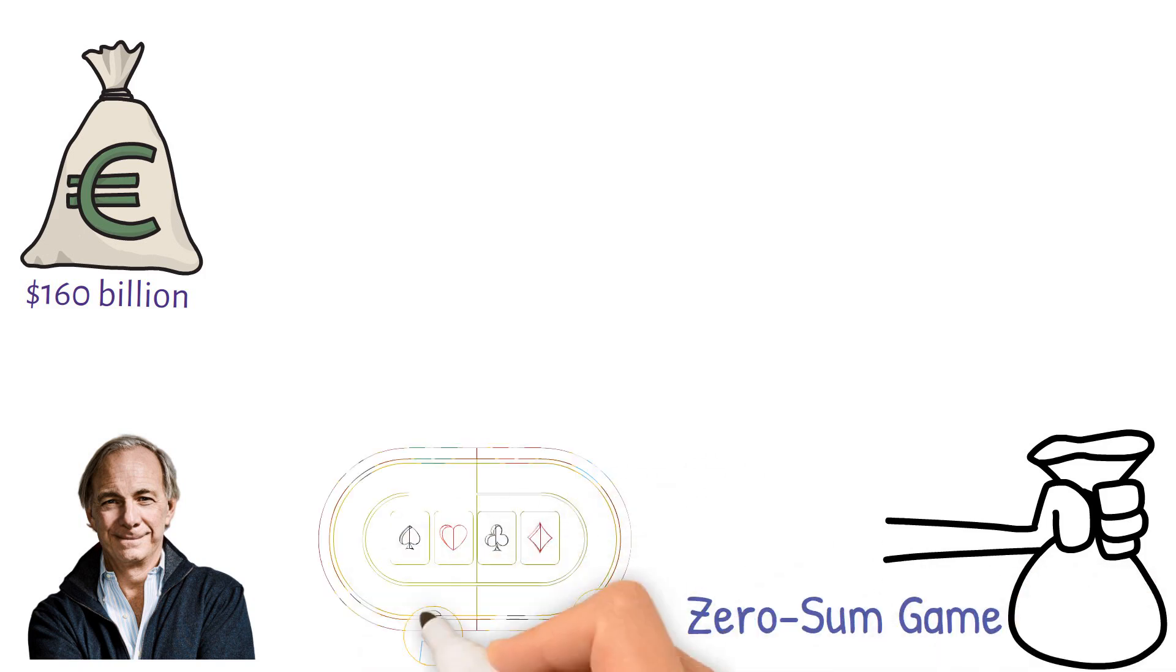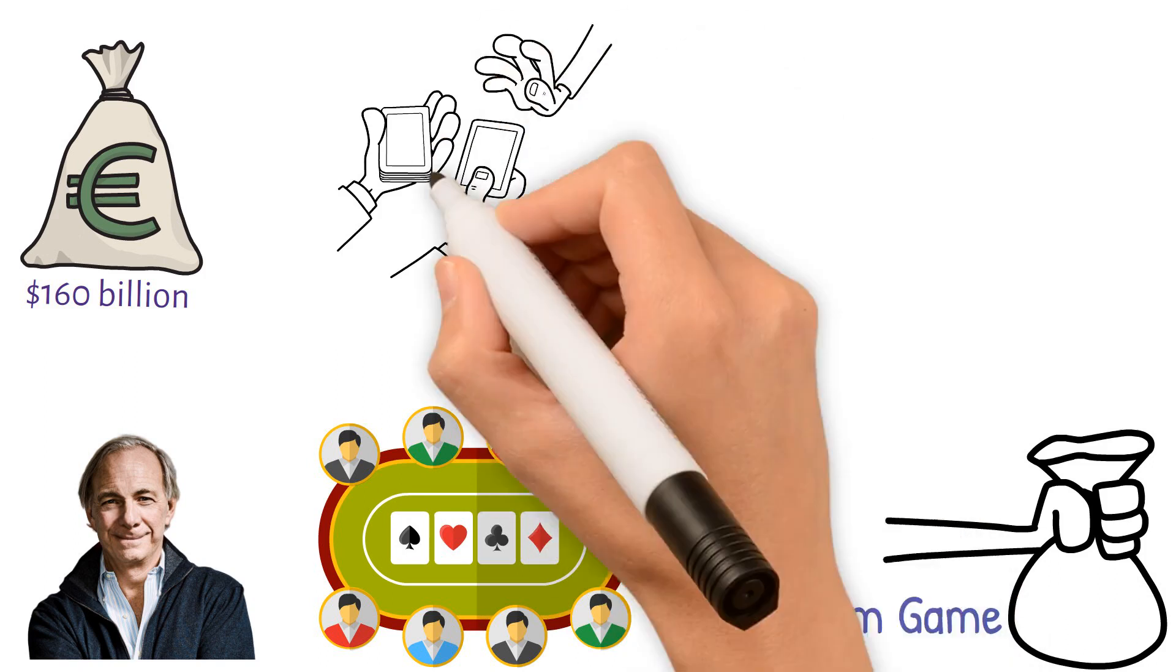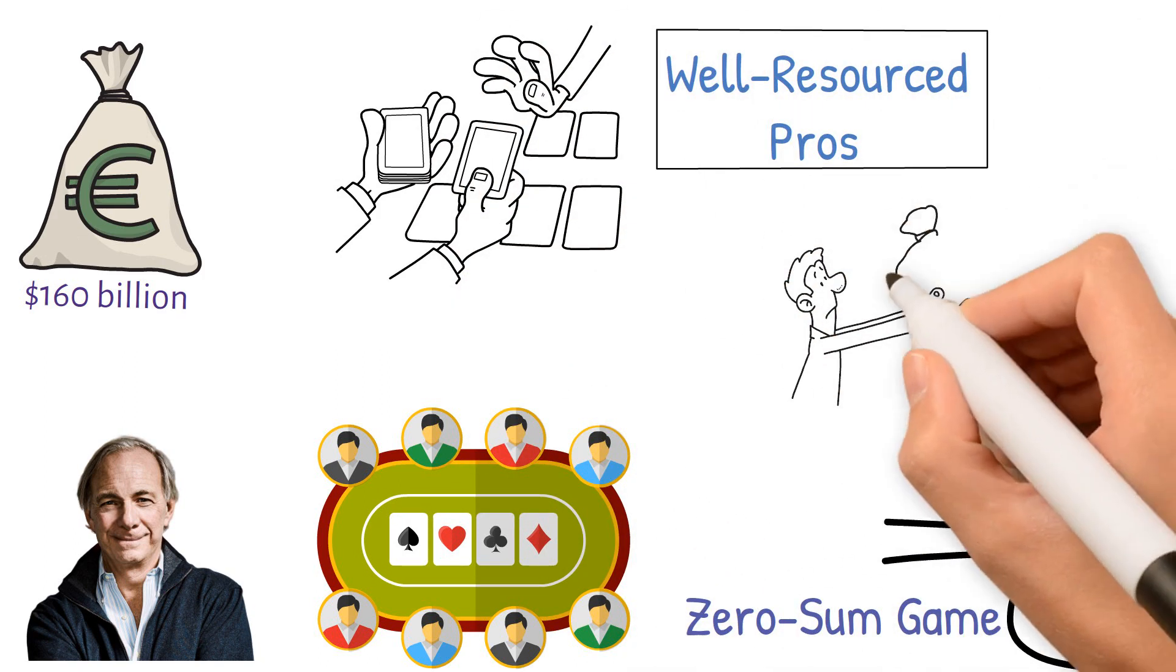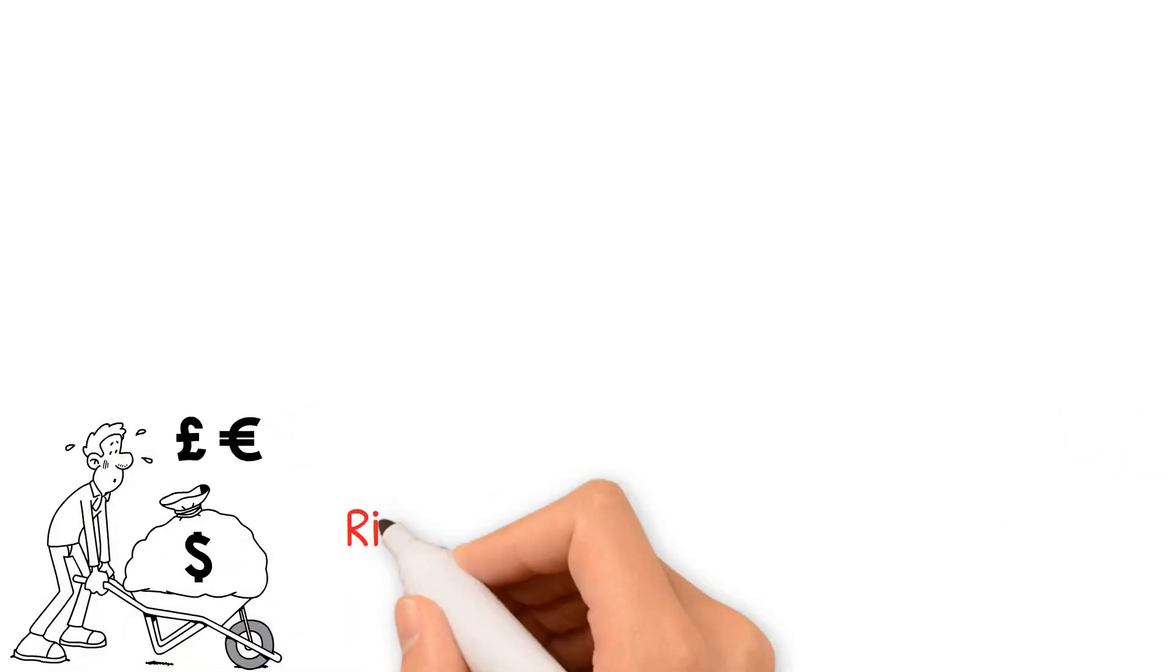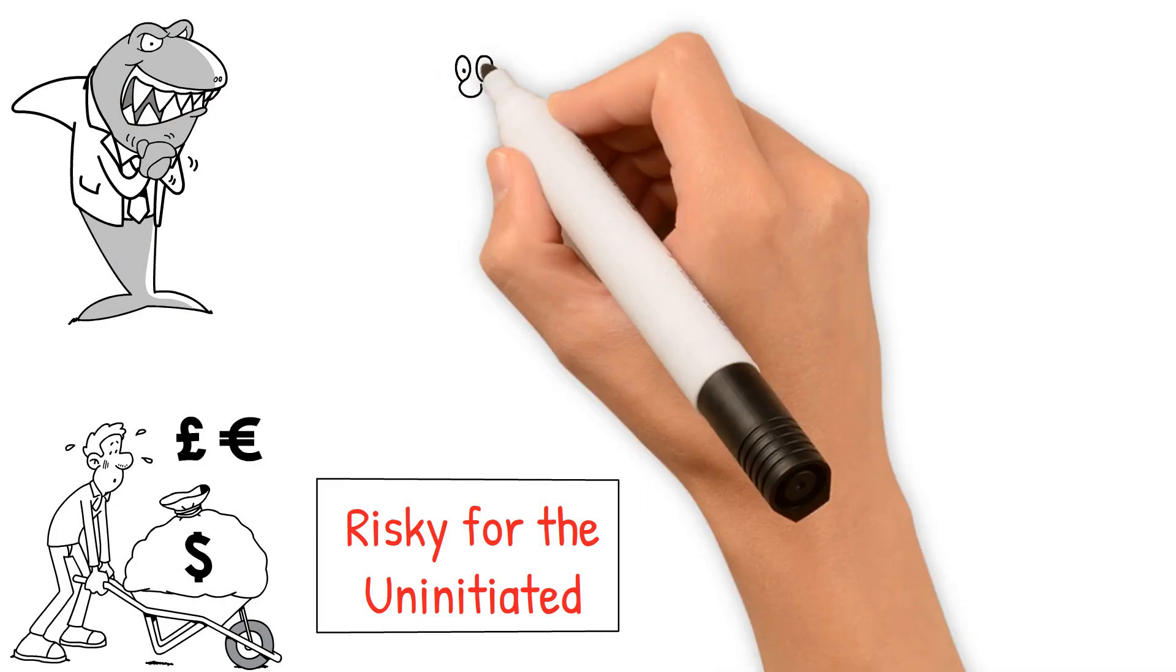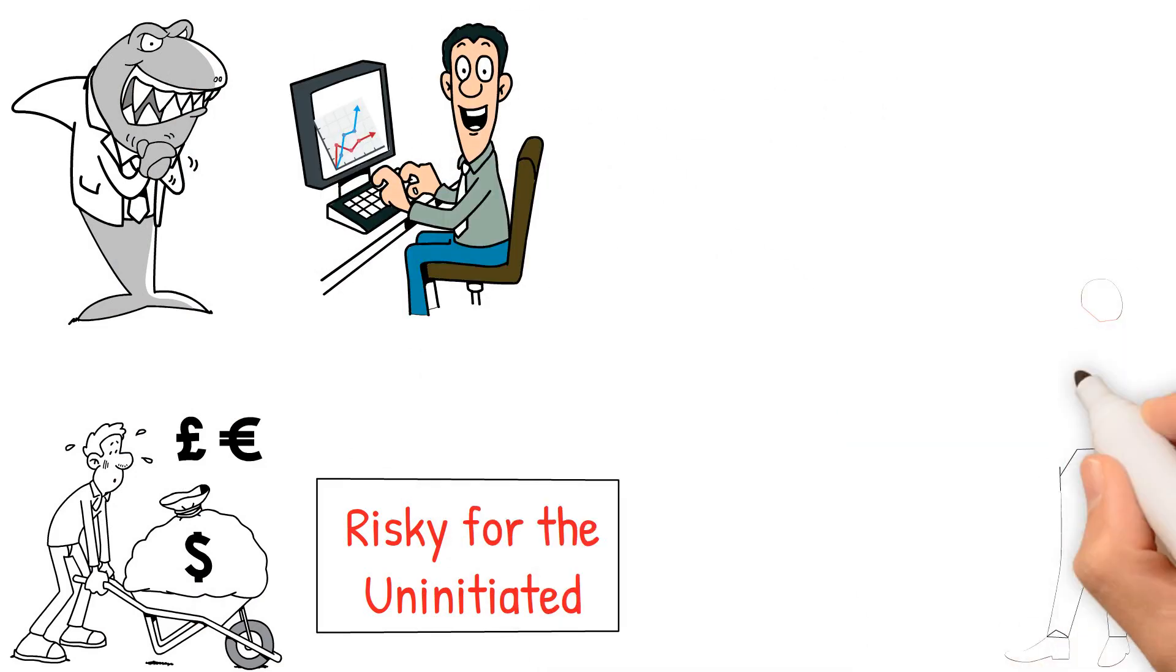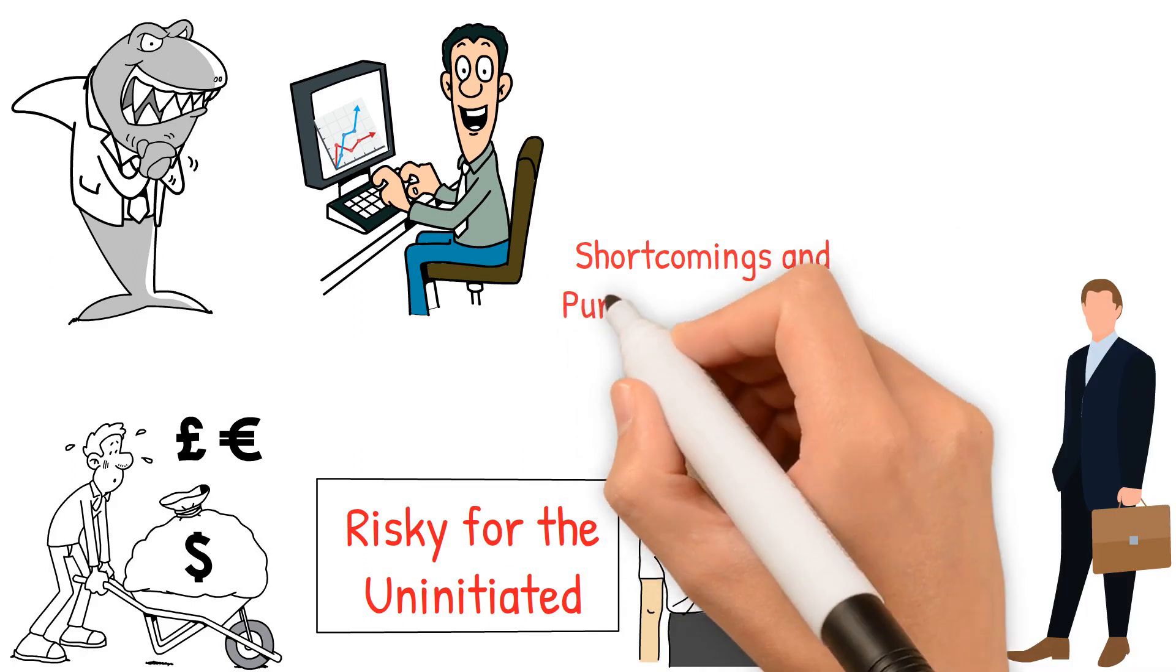Dalio interestingly equates investing to poker, where the average player is at a disadvantage against the well-resourced pros. Dalio fervently advises against putting all investments in one place. He paints the investment landscape as a perilous jungle, risky for the uninitiated. To thrive amidst the financial sharks, one needs foresight and the ability to forecast market trends. While it's tempting to assume expertise in financial matters, Dalio highlights the strength in acknowledging one's shortcomings and pursuing knowledge.